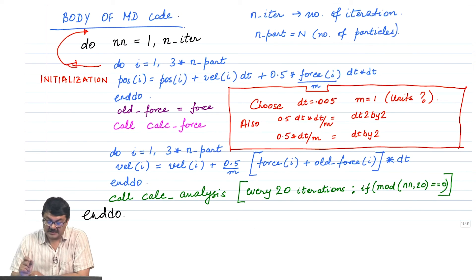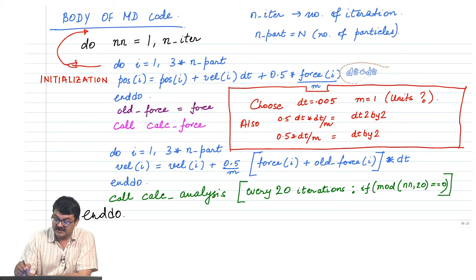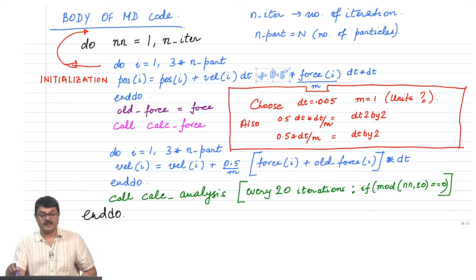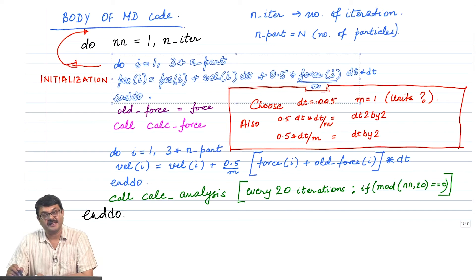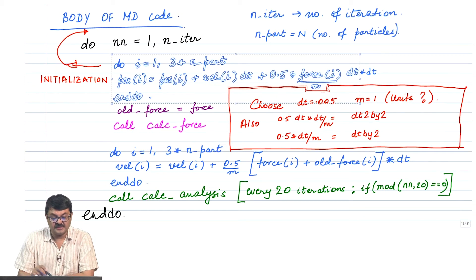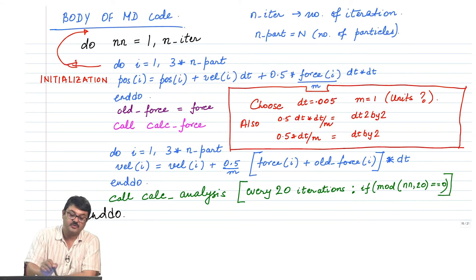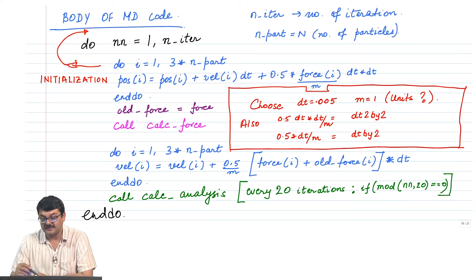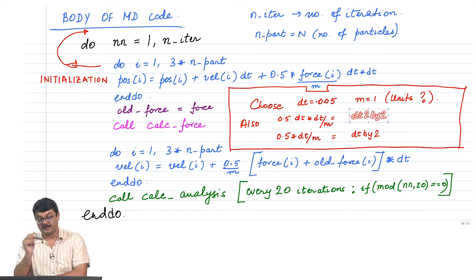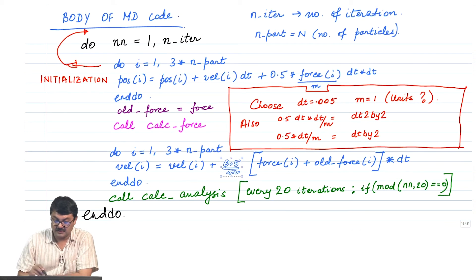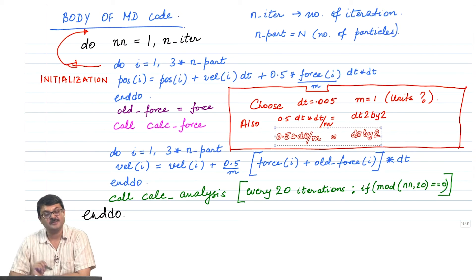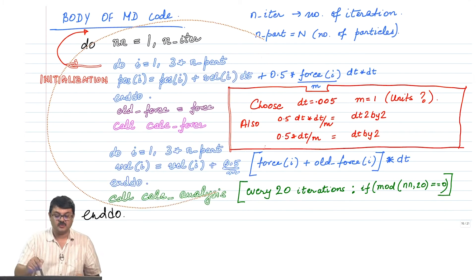We typically choose m equal to 1, but there are quantities like dt times dt times 0.5 divided by m. There is no point in writing it like this every time in the loop. This calculation — dt squared by m times 0.5 — is done in each iteration, 3 times n_part times the number of iterations. Instead, replace this quantity by a variable, say dt2 equal to dt squared divided by 2, computed once at the beginning of the code.